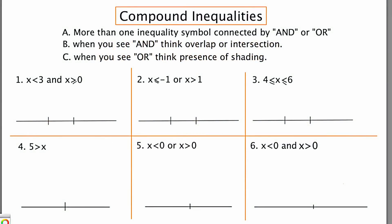Hey guys! In this video we're going to talk about compound inequalities. Those are mathematical sentences that contain more than one inequality symbol in them, connected by the words AND or OR. When you see the word AND, I want you to think of overlapping regions or overlapping colors. When you see the word OR, I want you to think of the presence of shading.